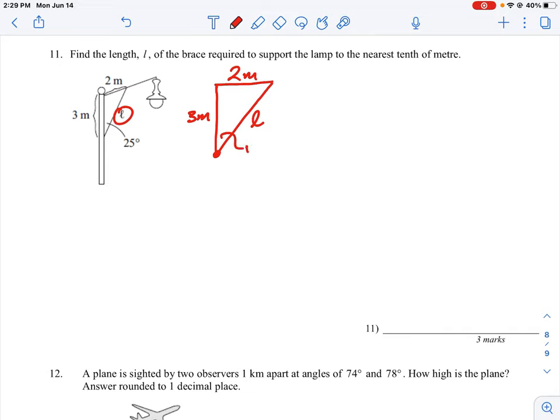And we're told that this point here makes a 25 degree angle with the post. We don't know what the two angles are here and we don't know what L is. So our goal here is to calculate L.